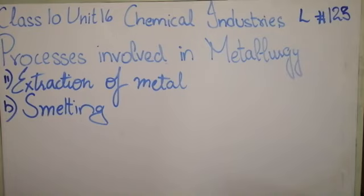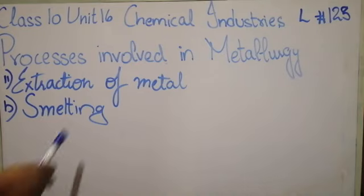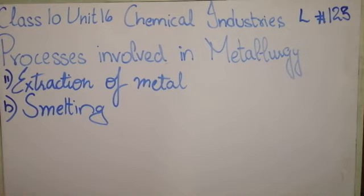After that, the second step is the extraction of metal from the concentrated ore. In the concentrated ore, you have to extract the metal. There are two processes involved in it: chemical reduction or electrolytic process. We are talking about chemical reduction.